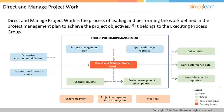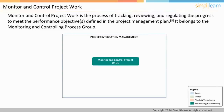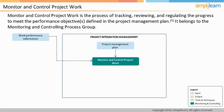Monitor and control project work is the process of tracking, reviewing, and regulating the progress to meet the performance objectives defined in the project management plan. For example, if the estimated time performance measurement baseline is 180 days and 10%, this is the process area that tracks whether that baseline is being met or not. Project management plan is the key input, as the performance measurement baselines are part of it. The other key input is work performance information — the status of the project deliverables, the cost incurred, the time elapsed, etc.